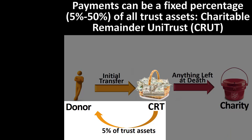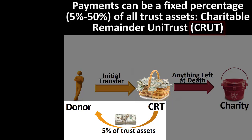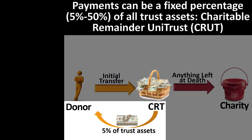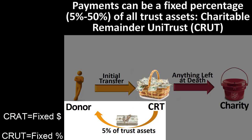Alternatively, payments can be a fixed percentage between 5% and 50% of all trust assets. This type of charitable remainder trust is referred to as a charitable remainder unitrust, or CRUT. This is the more common type of charitable remainder trust. Unlike the charitable remainder annuity trust, the charitable remainder unitrust allows the recipient to benefit from investment growth within the trust. The annuity payments in a CRAT are for a fixed dollar amount, but over time, inflation can reduce the purchasing power of that fixed dollar amount.